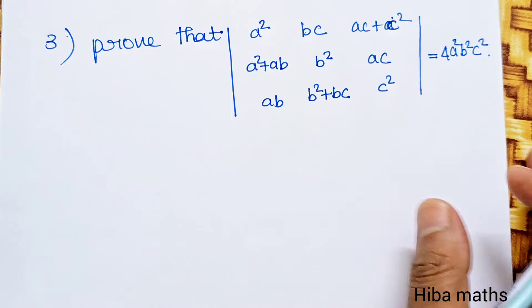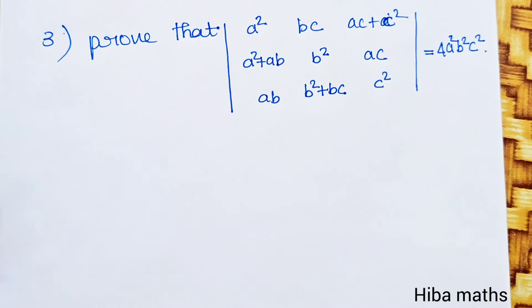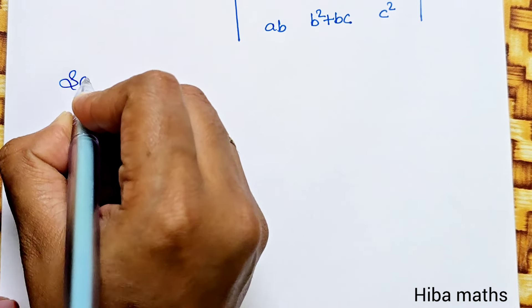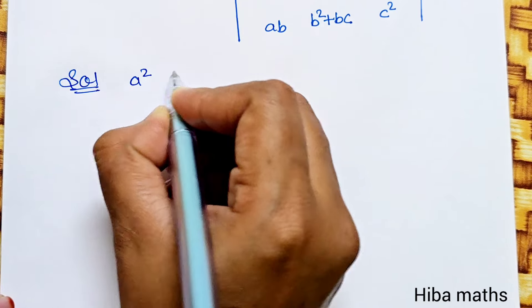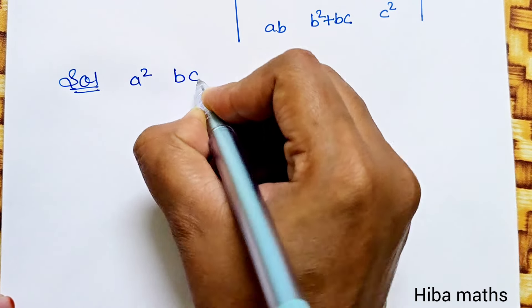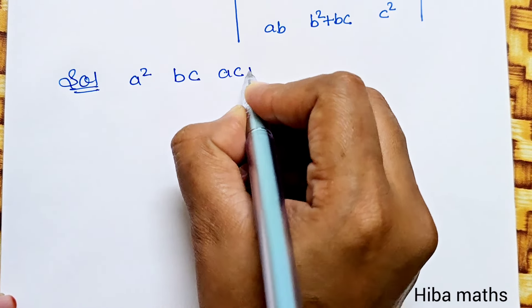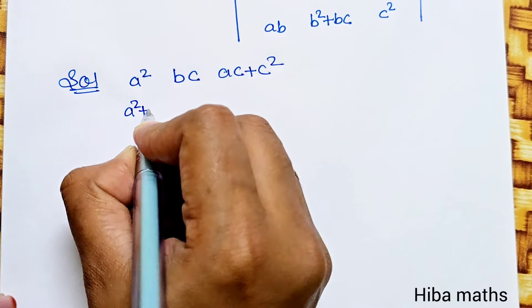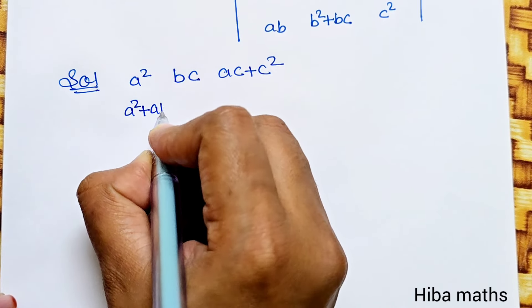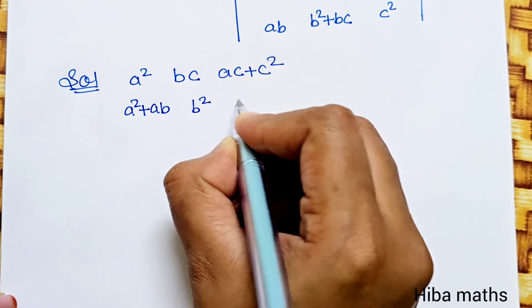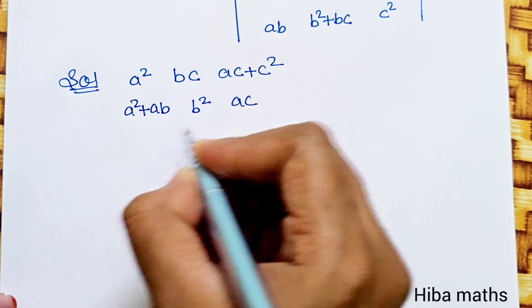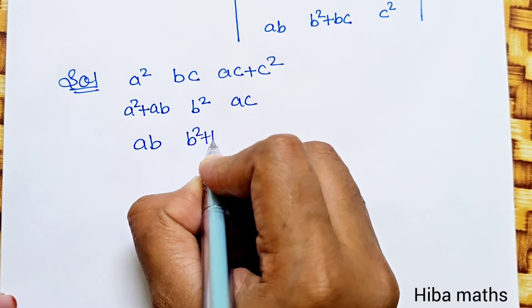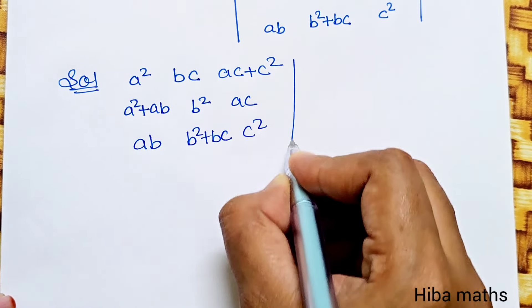So if we solve this problem, we will prove this value: A² BC·AC plus C²·A² plus AB·B²·AC·AB·B² plus BC·C².